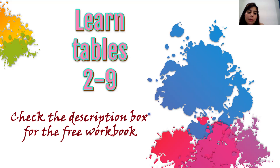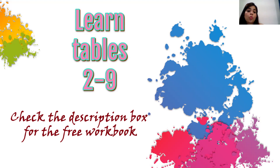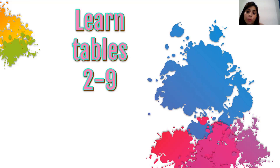Once you click the link you will be able to get the workbook. Practice a lot and learn the tables of 2 to 9 — there are many tips and tricks given so it will be easy. Once you have learned the tables from 2 to 9, you will be able to calculate all other tables till 99. Also don't forget to let me know in the comments whether you liked the times tables workbook.